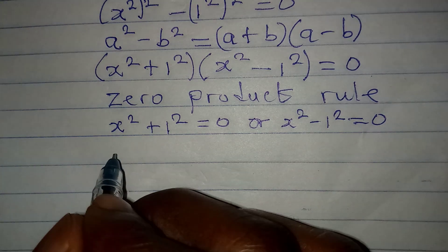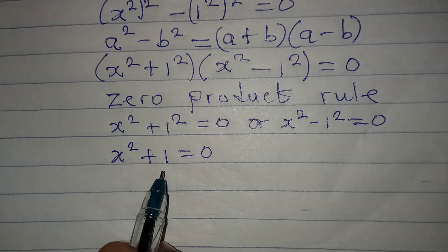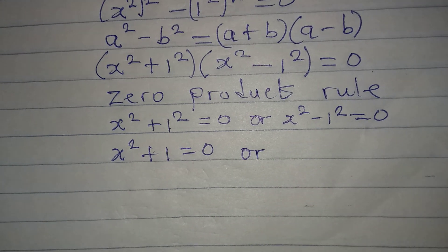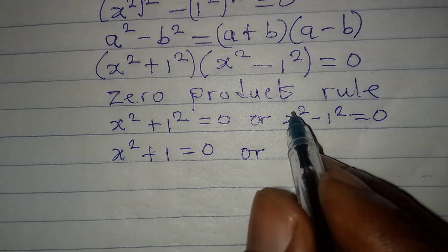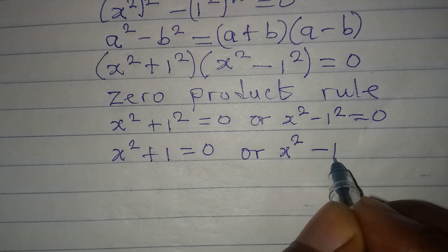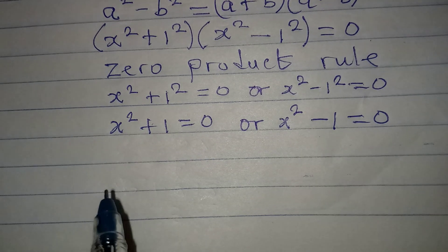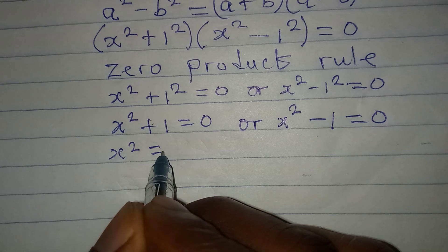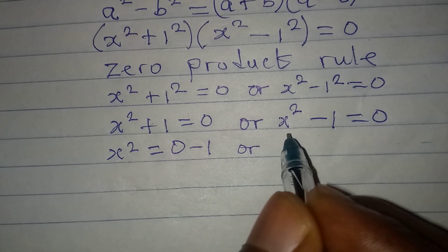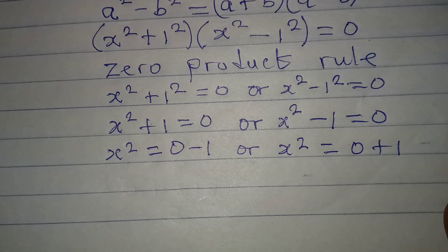So now from here, let's continue. This means that x squared plus 1 equals 0, because 1 squared gives 1. On the other side, I don't want to use difference of two squares again, so we have x squared minus 1 equals 0. Making x squared the subject: x squared equals 0 minus 1, or on this side, x squared equals 0 plus 1. So x squared equals negative 1, or x squared equals 1.